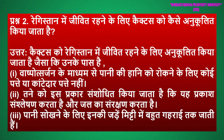रेगिस्तान में जीवित रहने के लिए cactus को कैसे अनुकूलित किया जाता है? उत्तर। Cactus को रेगिस्तान में जीवित रहने के लिए अनुकूलित किया जाता है, जैसे कि उनके पास है: 1. वाष्पोत्सर्जन के माध्यम से पानी की हानि को रोकने के लिए कोई पत्ते या कांटेदार पत्ते नहीं। 2. तना इस प्रकार संशोधित किया जाता है कि यह प्रकाश संश्लेषण करता है और जल का संरक्षण करता है। 3. पानी सोखने के लिए इनकी जड़ें मिट्टी में बहुत गहराई तक जाती हैं।